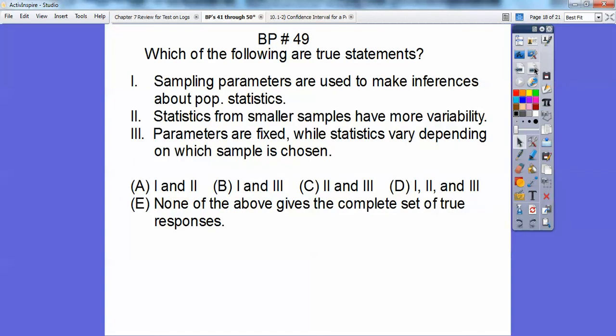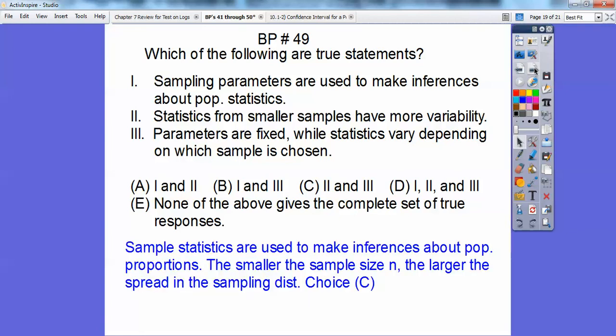Which of the following are true statements? Sampling parameters are used to make inferences about population statistics. Remember, parameter is a fixed number that we usually don't know that describes the population. Statistics from smaller samples have more variability. Well, that's true. Parameters are fixed while statistics vary depending on which sample is chosen. Sampling statistics are what's used to make inferences about population proportions, not sampling parameters. So it's not choice one right there. And sample sizes, when the smaller sample size, the larger spread in the sample distribution. So both two and three are correct on that one, choice C.